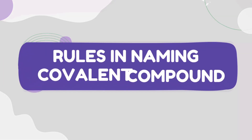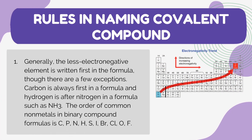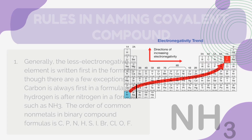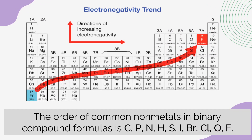Here are the rules for naming covalent compounds. Generally, the less electronegative element is written first in the formula, though there are a few exceptions. Carbon is always first in a formula and hydrogen is after nitrogen, such as NH3. The order of common nonmetals in a binary compound formula is: carbon, phosphorus, nitrogen, hydrogen, sulfur, iodine, bromine, chlorine, oxygen, and fluorine.